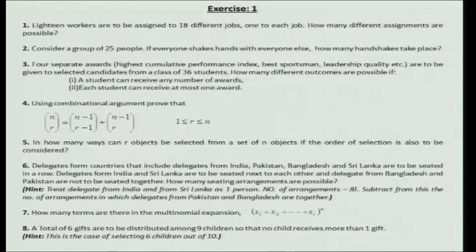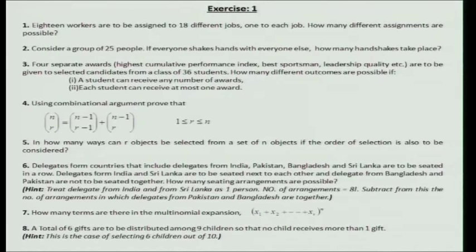Question 7: how many terms are there in the multinomial expansion of (x1+x2+...+xr)^n? As I explained, you are counting the number of ways to partition n into r non-negative integers. Setting all xi = 1 gives r^n on the left side, which equals the number of terms in the expansion. Finally, question 8: a total of 6 gifts are to be distributed among 9 children so that no child receives more than one gift — this is exactly like part 2 of question 3.